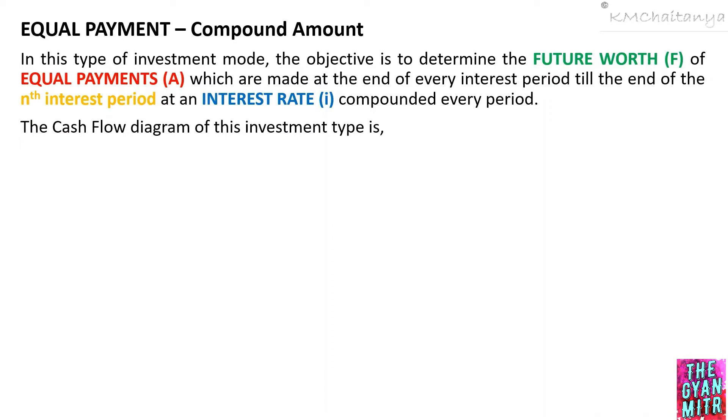The cash flow diagram of this investment type is you have a timeline, you have an equal payment at the end of every interest period. This payment is also known as annuity. For this payment, we are supposed to determine what will be the single future worth after nth interest period at an interest rate I.